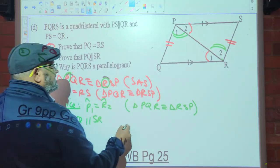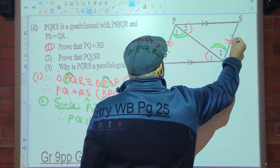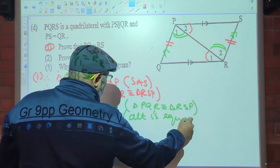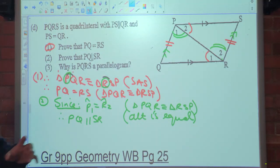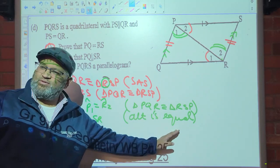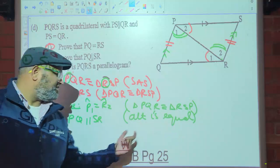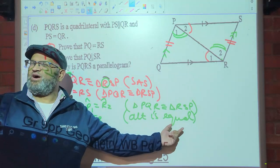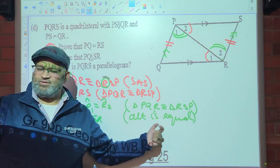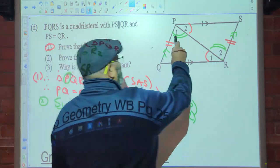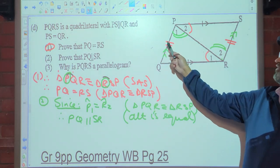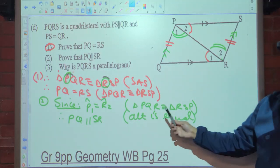Since angle P1 is equal to R2 — why? Because triangle PQR is congruent to triangle RSP. Since that is the case, therefore PQ is parallel to SR — why? Alternate angles are equal. When we prove that lines are parallel, we say alternate or co-interior or corresponding angles are equal. Here we must go further: PQ is parallel to SR because we are actually proving it.